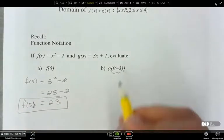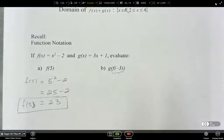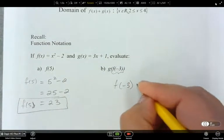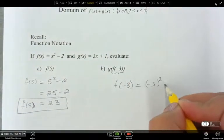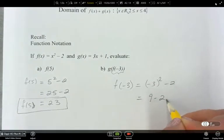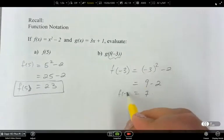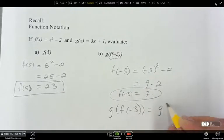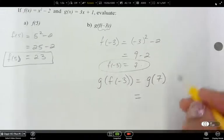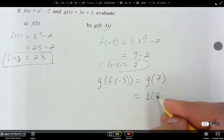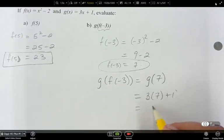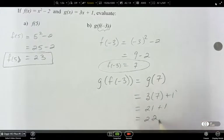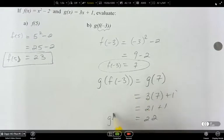And then now here, for these ones that are embedded, like one function inside of the other, figure out the inside one first, work inside, then outside, just like order of operations. So, figure out f of minus three first. So, what is f of minus three? Negative three squared minus two. Nine minus two, that's seven. So, f of minus three equals seven. We're going to use that, and instead of g of f of negative three, I can say that that's equal to g of seven. So, then I can evaluate g of seven. So, three times seven plus one, and twenty-one plus one, twenty-two. So, that's g of f of negative three.